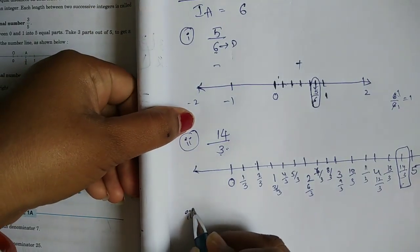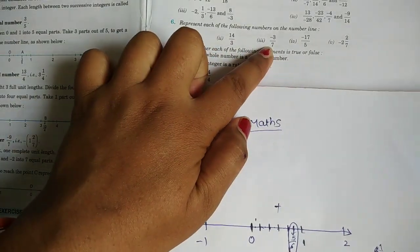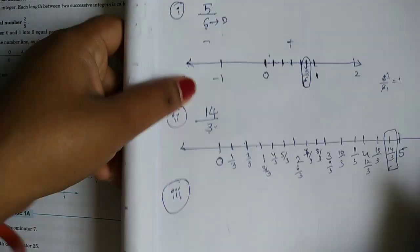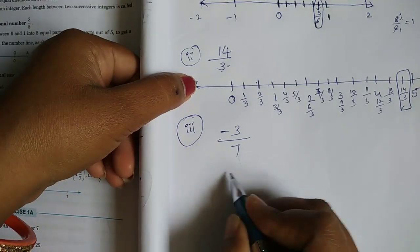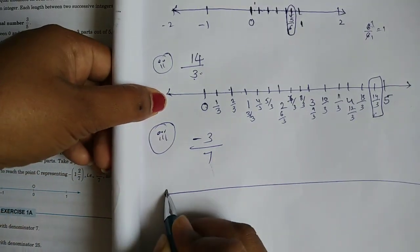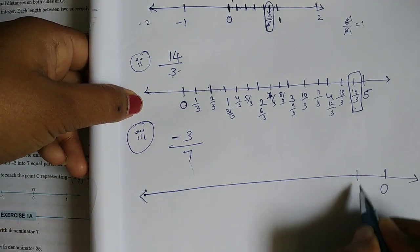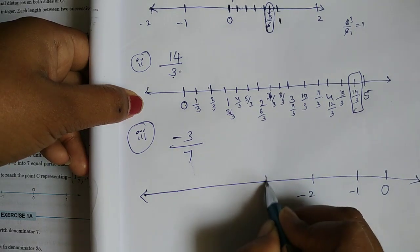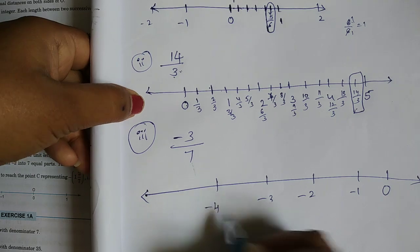Next, third question. What is minus 3 by 7? Minus 3 by 7 is a negative number, so we work with the negative side. Here we have 0, minus 1, minus 2, minus 3, minus 4 on the negative side.